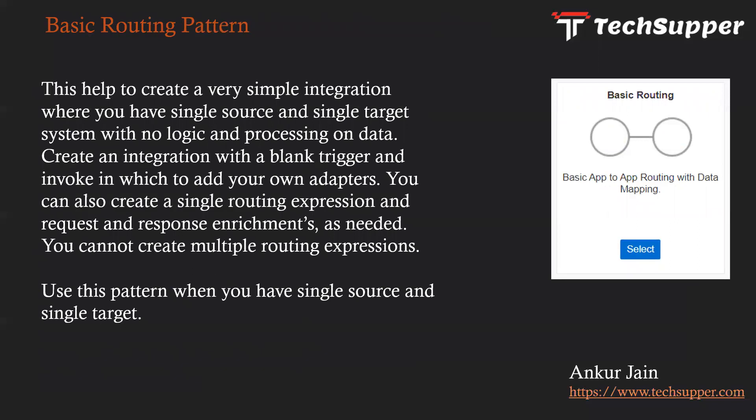The next pattern is Basic Routing. This is the simplest pattern — it helps us create a very simple integration with a single source and a single target system, with no logic or processing on the data. You create an integration with a blank trigger and invoke where you add your own adapters, and you can create a single routing expression and request/response enrichments as needed. Unlike App Driven Orchestration, no activities are available in this pattern — only source and target connections. Use this when you have a single source and single target with no complex processing.